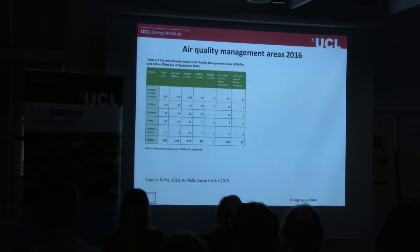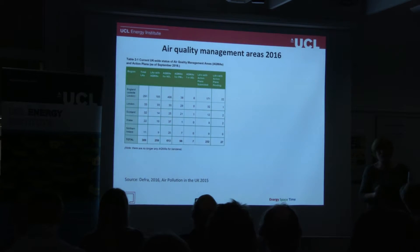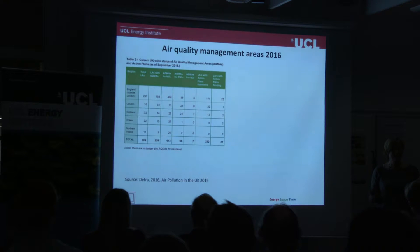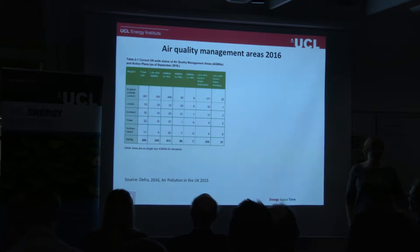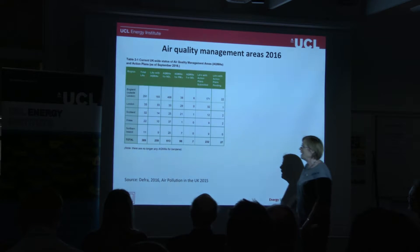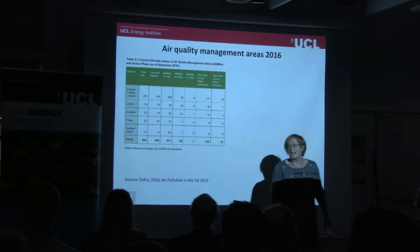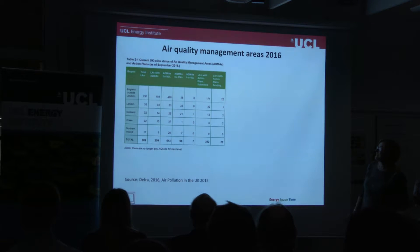We're now zooming forward to 2016. In the UK, we have the EU limit values, but we also have national legislation — the Environment Act 1995 required local authorities to review and assess air quality within their boundaries on a regular basis. There are national air quality objectives with the same values as the EU directive: 40 micrograms per cubic metre annual average for NO2. If you exceed those objectives, you have to declare an air quality management area and then you have to have an air quality action plan. This shows the number of local authorities — 289 in the UK — and two-thirds of them have an air quality management area.